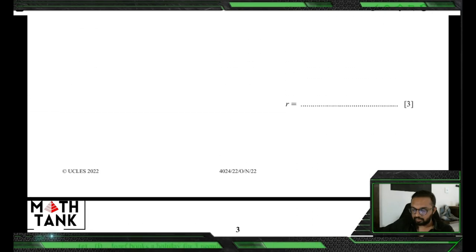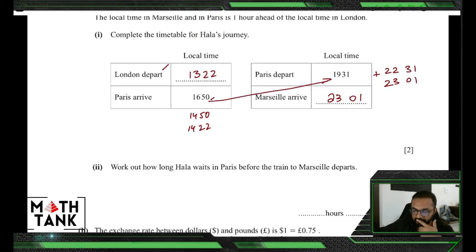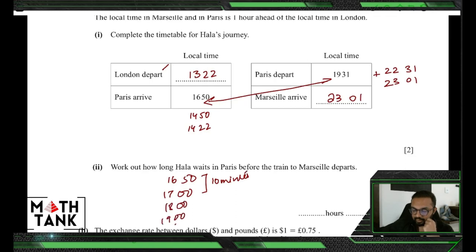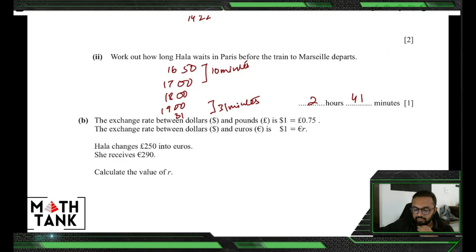The answers are 23:01 and 13:22. Work out how long Hola waits in Paris before the train to Marseille. Going to the nearest hour: 10 minutes to 17:00, then two hours to 19:00, plus another 31 minutes, giving a wait of 2 hours 41 minutes. Then the exchange rate question: she changes 250 pounds into euros and receives 290 euros. Calculate the value of r.